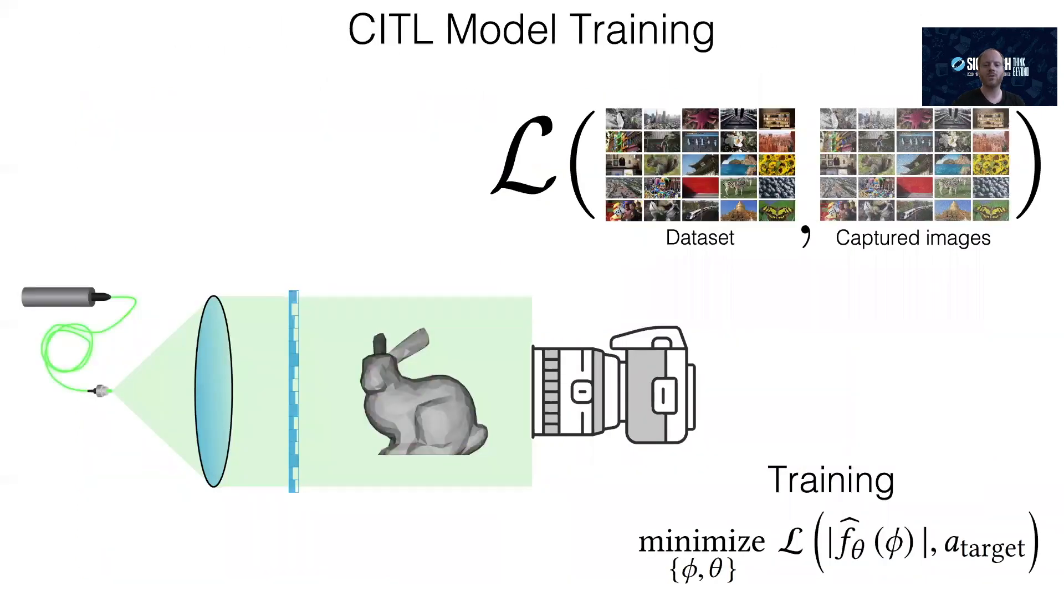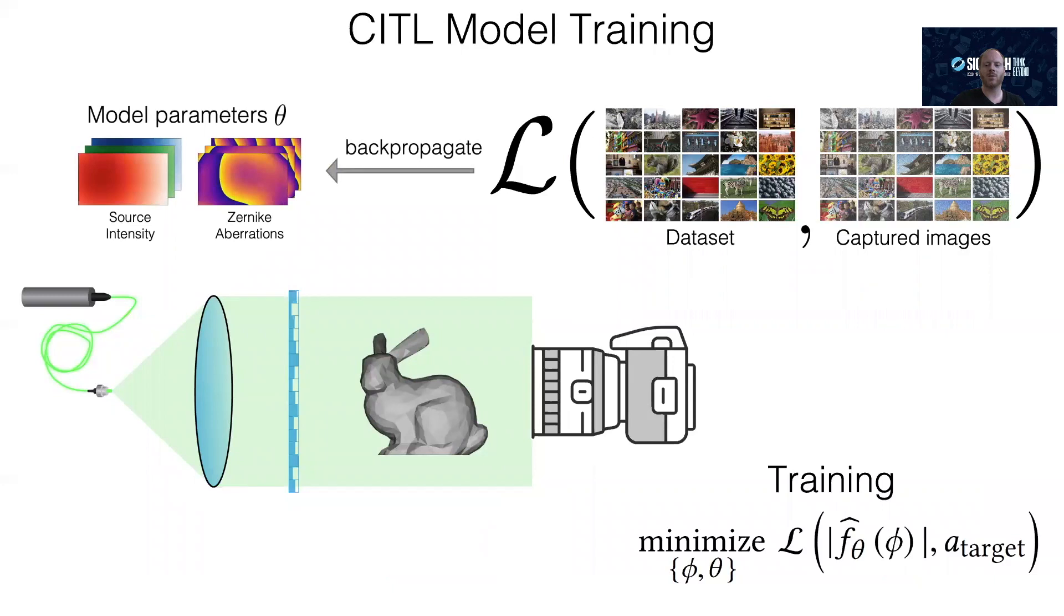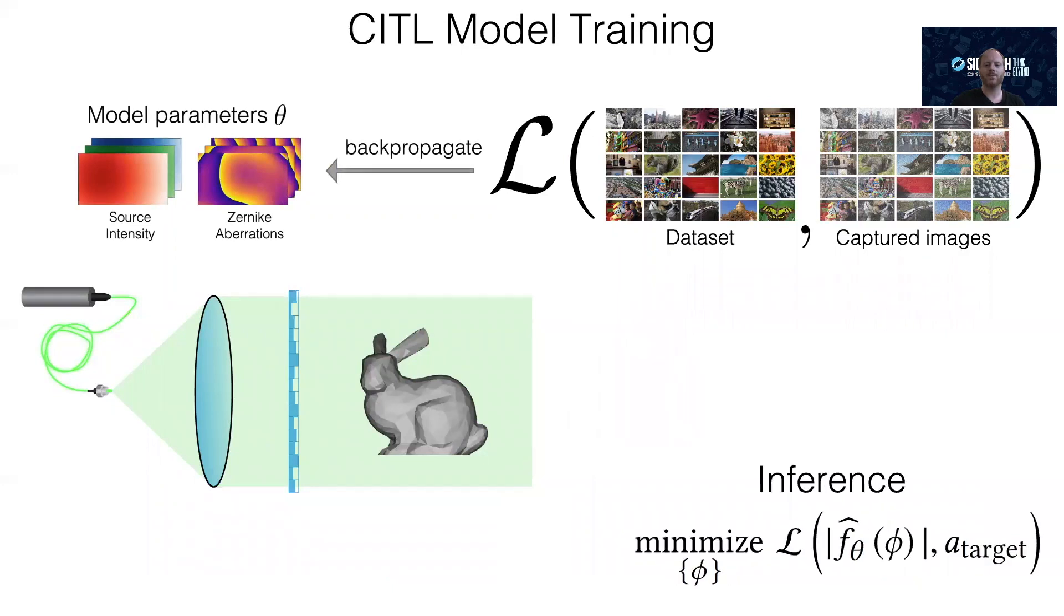To overcome this limitation, we came up with an idea that splits the optimization into a training stage and an inference stage. During the training stage, we use the camera to estimate a model-based representation of the physical light transport using a training set of images. During inference, we don't need the camera and only use our calibrated model for optimizing new target images.